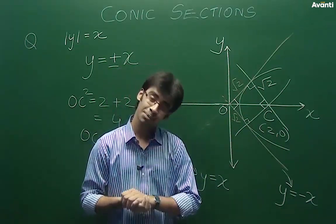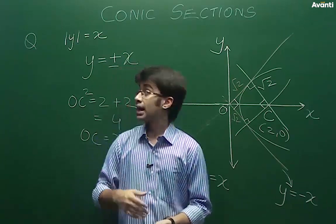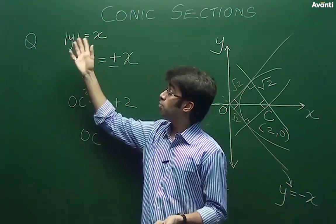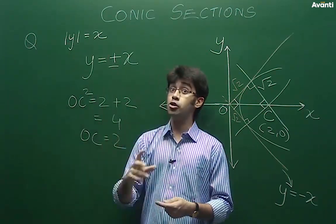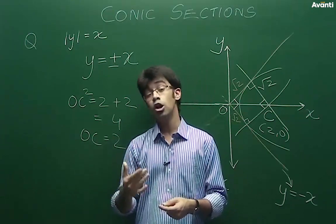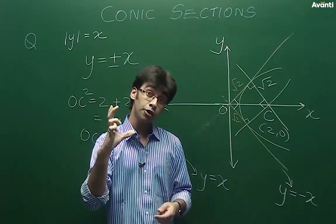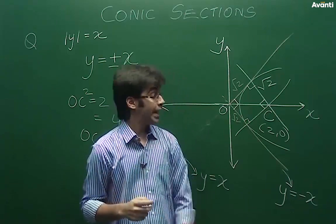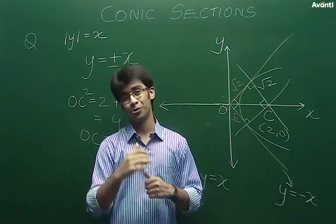तो इससे question काफी simple हो गया है और हमें equation of the circle मिल गई है। तो इस question में आपने ये सीखा — अगर आपके पास कभी ऐसी condition दी गई हो, तो mod निकाल के पहले दोनों lines बना दीजिए। मगर जो mod की condition थी जो violate नहीं होनी चाहिए, उस condition को भी ध्यान रखें। जो relevant part of the line है सिर्फ उसे रखें। एक बार ये हो जाएगा तो बाकी का calculation काफी simple हो जाएगा।